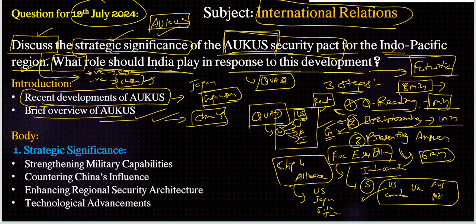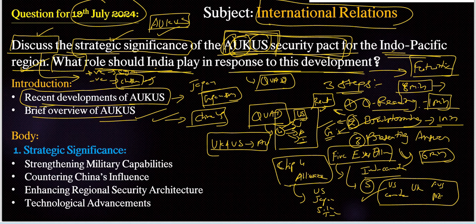AUKUS means Australia, UK (United Kingdom), and US — all three form a security pact, not an alliance or dialogue. It is a security pact, meaning an agreement. The agreement is to transfer technology from UK and US to Australia. The technology is mainly nuclear submarines — nuclear-powered submarine technology — to help Australia acquire and develop nuclear-powered submarines. That is the main aim of this AUKUS Security Pact.